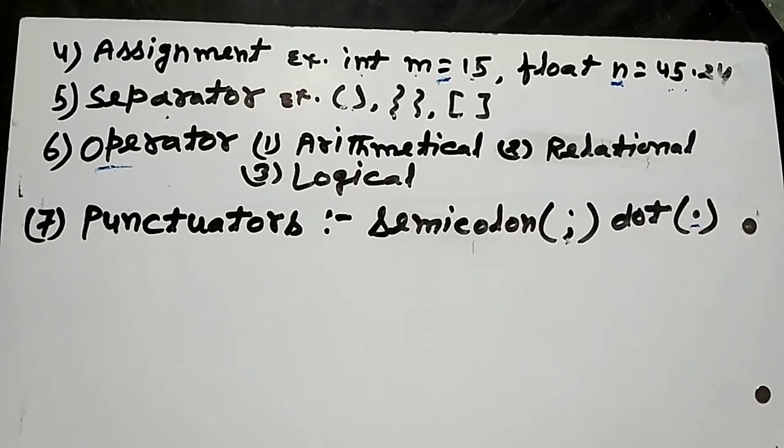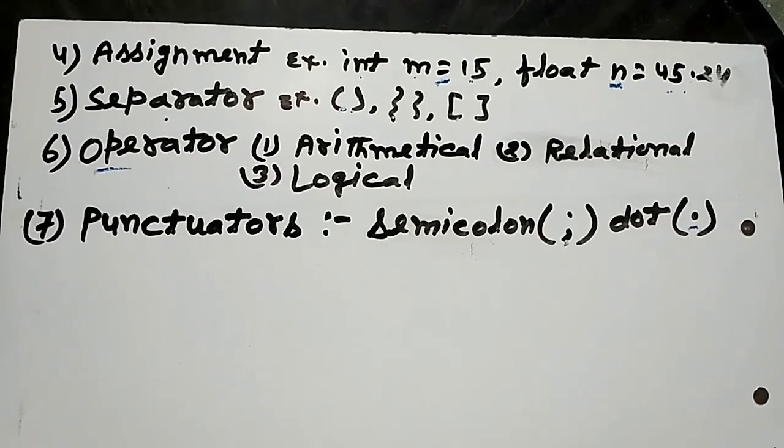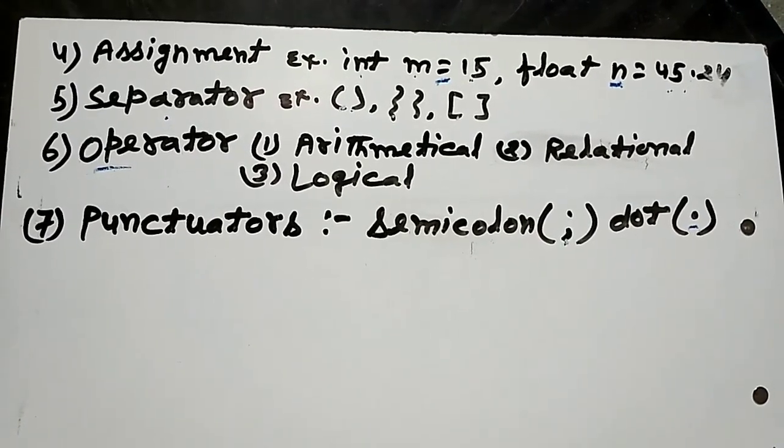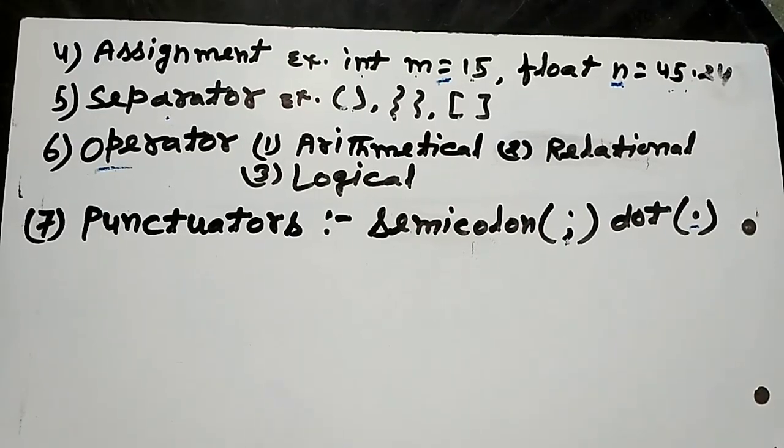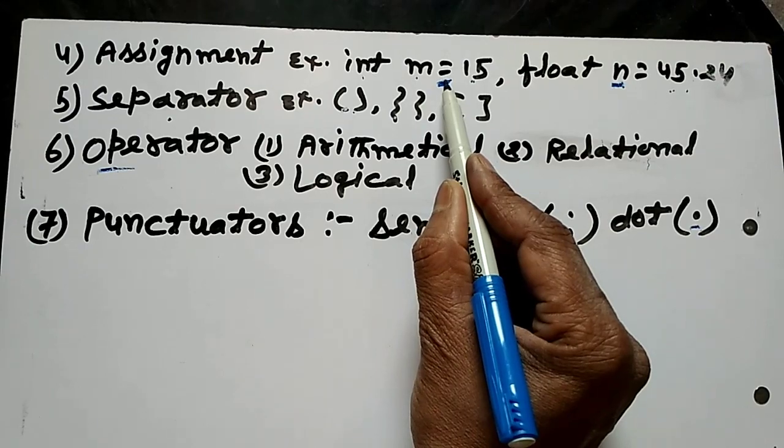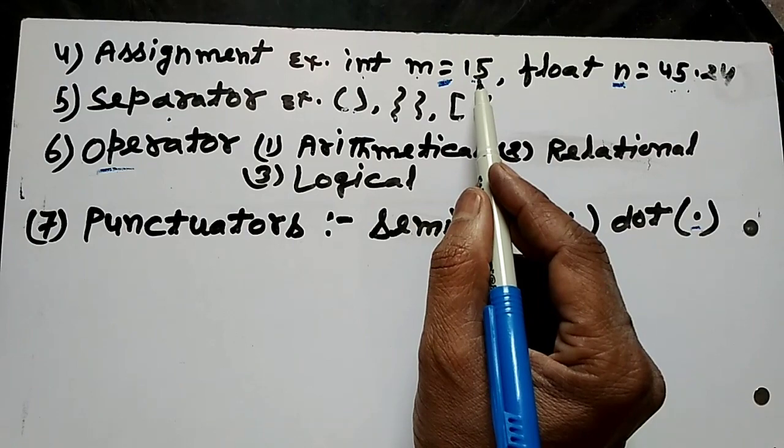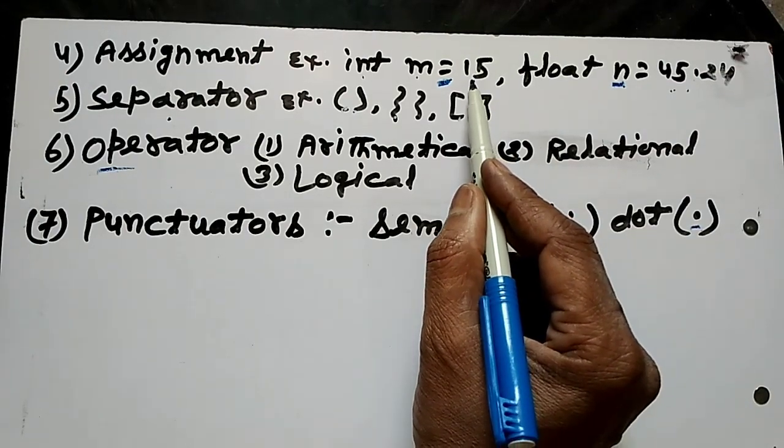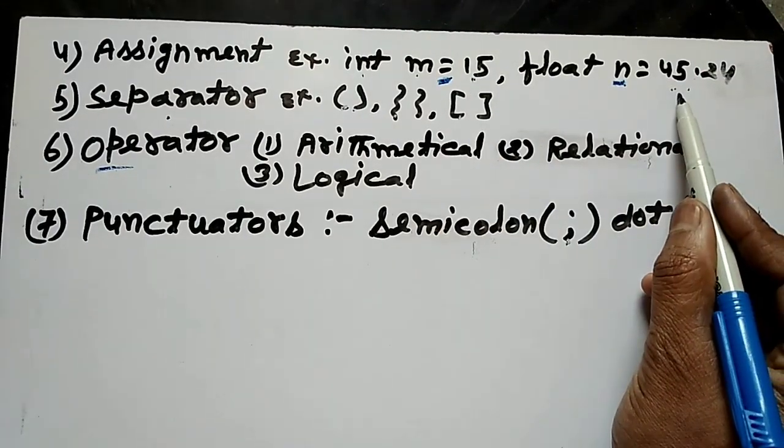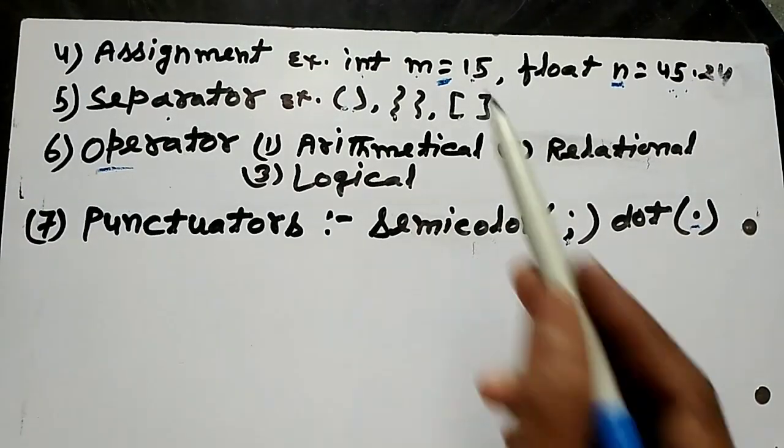Next one is assignment operator. Assignment operator equal to sign is used as assignment operator which use to store the integer type of literal, float type of literal, or any type of another literals stored in the variables.